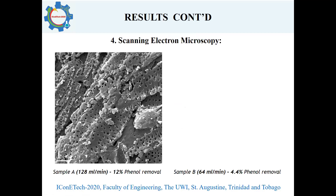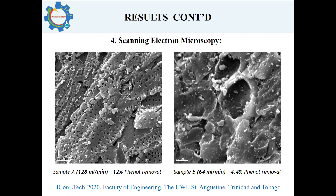These are the photos obtained from scanning electron microscopy. In sample A, which was produced at the highest flow rate of carbon dioxide, accounting for 12% phenol removal, we can see a larger volume of pores developed compared to sample B, which was at the lower end of the carbon dioxide flow rate range and only translated to 4.4% phenol removal.